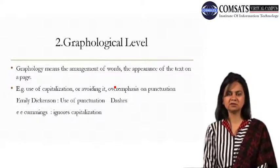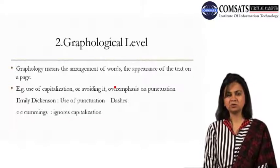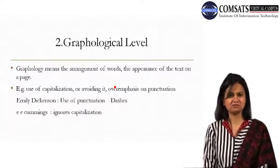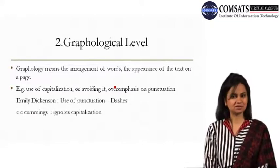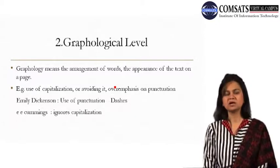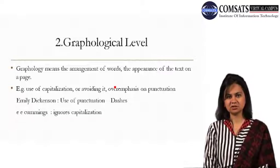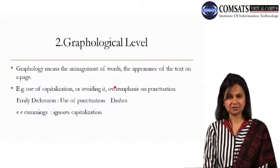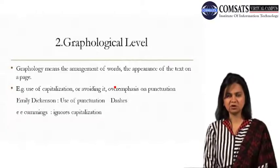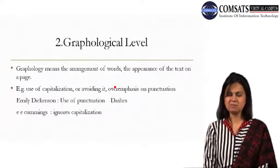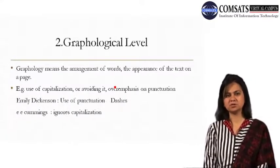There are a number of poets known for their experimentation with graphological aspects of English. For example, Emily Dickinson's use of capitalization is inventive — she capitalizes words that would not normally be capitalized. Similarly, she overuses punctuation: commas, dashes, and ellipses. These marks are used not just for appearance but also to make the text seem strange and unfamiliar to the reader.